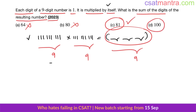I used the divisibility rule of nine: this number is divisible by nine, and this number is divisible by nine, so the resultant must be divisible by nine. When a number is divisible by nine, the sum of its digits should also be divisible by nine. Among the given options, 81 is divisible by nine — that is what I checked.